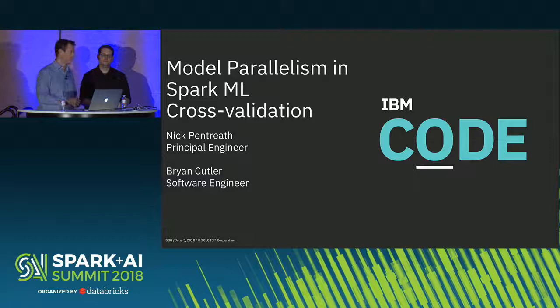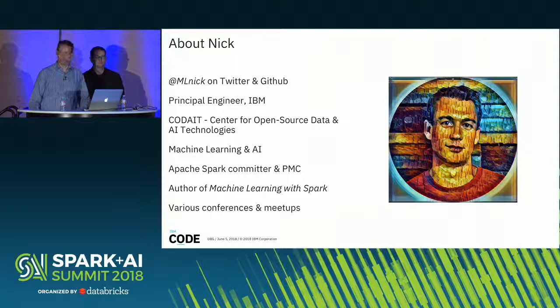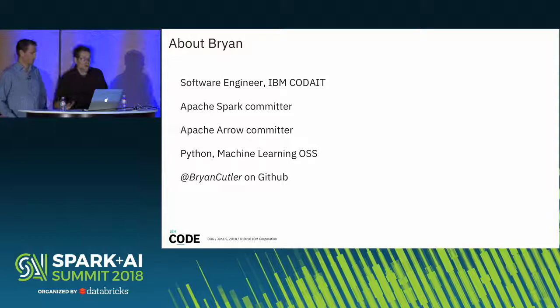Good afternoon everyone, thanks very much for coming through. I'm Nick Pentreath and this is Brian Cutler, and today we'll be talking about parallelizing cross-validation in Spark ML. I'm ML Nick on Twitter and GitHub. I'm a principal engineer at IBM working in the Code A team, which is a center for open source data and AI technologies. I focus on machine learning and AI, and I'm an Apache Spark Committer and PMC member.